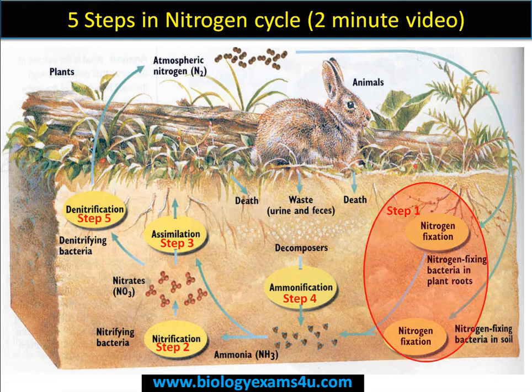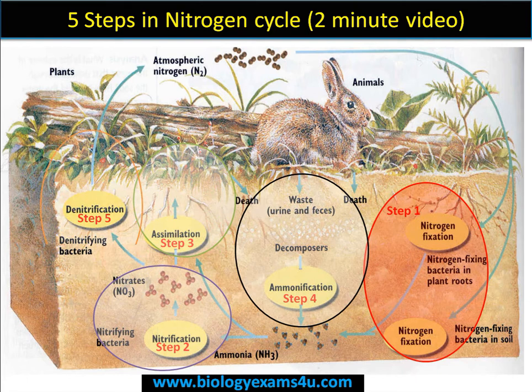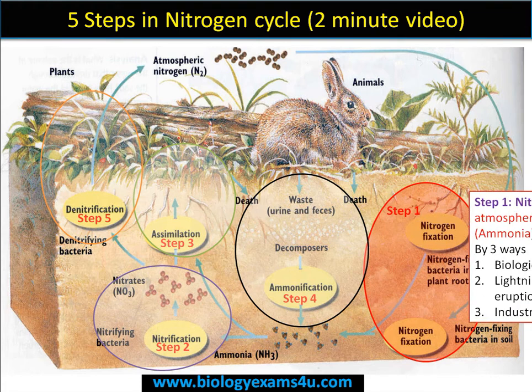These are the steps of the nitrogen cycle: first step is nitrogen fixation, second step is nitrification, third step is assimilation, fourth step is ammonification, and the final step is denitrification. Moving into the first step, that is nitrogen fixation.